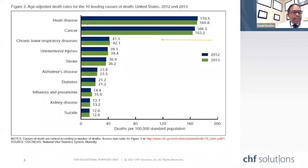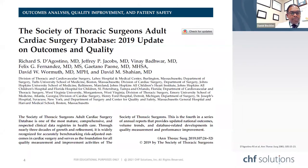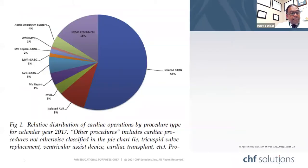Heart disease remains the leading cause of mortality in the United States, and as the population increases in age along with other cardiovascular risk factors, we can anticipate an increase in postoperative complication rates. Using our 2019 STS data, the most common cardiac surgery cases performed were coronary artery bypass graft in about 55% of cases, valves and aortic aneurysms at about 30%, and 16% others like VADs and transplants.